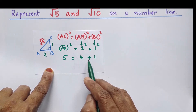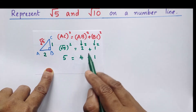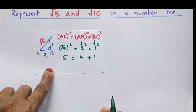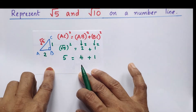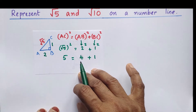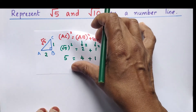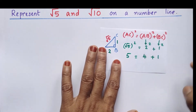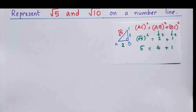We can also interchange the sides — take AB as 1 and BC as 2, no problem. Now let us represent root 5 on the number line. For that, I am going to draw a number line.